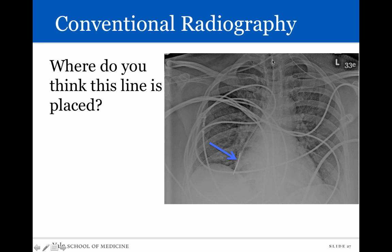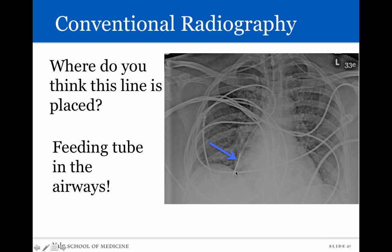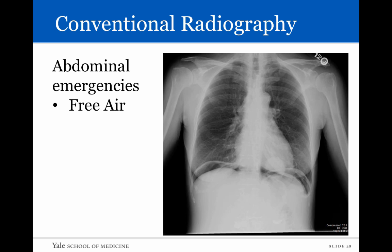If a line is in the wrong position — look at this line here, supposed to be in the stomach — where do you think it's placed? It was actually placed in the airways, so it's important to detect that so you don't initiate feeding and cause damage to the lungs. Conventional radiography is also great for some abdominal emergencies, for example free air. You should never have air inside your abdominal cavity — it should be located in the bowel. If that air escapes the bowel and goes inside the abdominal cavity, it causes free air as you can see here. This is an abdominal emergency and this patient would have to go to the operating room very quickly.